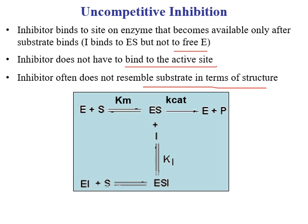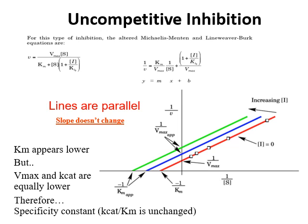Looking at the model for uncompetitive inhibition based on Michaelis-Menten, the inhibitor factor of concentration of inhibitor over Ki is only added to the substrate concentration term. When we take the reciprocal of this modified Michaelis-Menten, we get the altered Lineweaver-Burk equation for uncompetitive inhibition, where the inhibitor concentration factor appears. When plotted with increasing inhibitor concentration, the lines are parallel — they do not intersect.